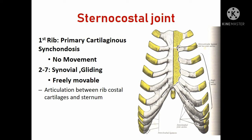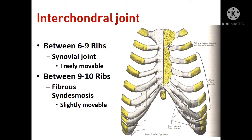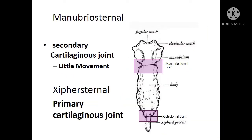The interchondral joints are between the sixth to ninth ribs — they are synovial, freely movable joints. Between the ninth to tenth ribs, it is a fibrous joint, so slightly movable. The manubriosternal joint is a secondary cartilaginous joint, with only gliding movements present. The xiphisternal joint is a primary cartilaginous joint.